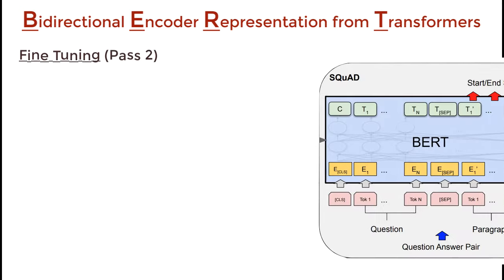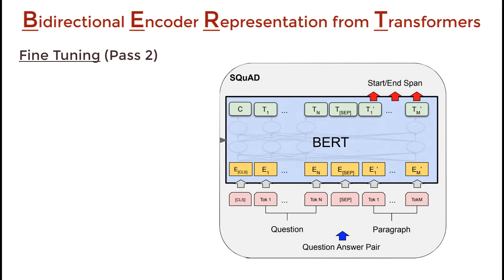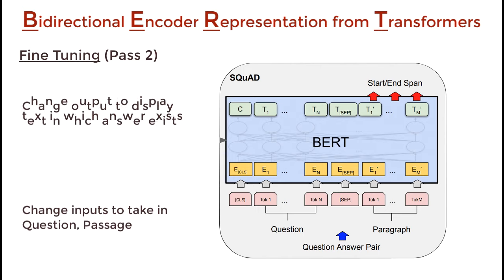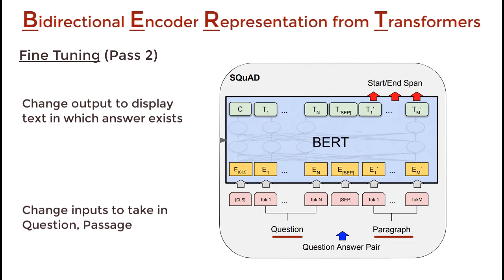In the fine-tuning phase, for question answering, we train the model by modifying the inputs and output layer. We pass in the question followed by a passage containing the answer as inputs. In the output layer, we output the start and end words that encapsulate the answer, assuming that the answer is within the same span of text.